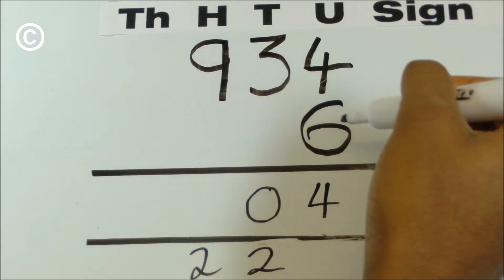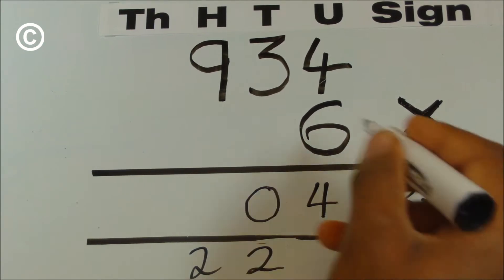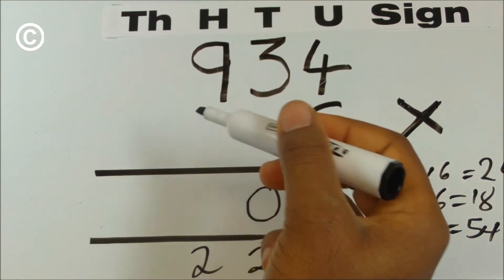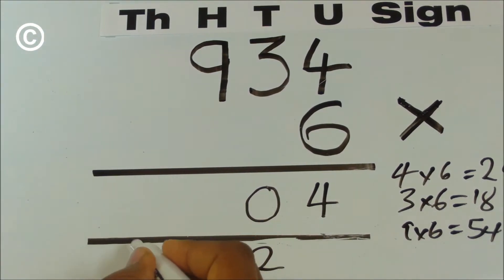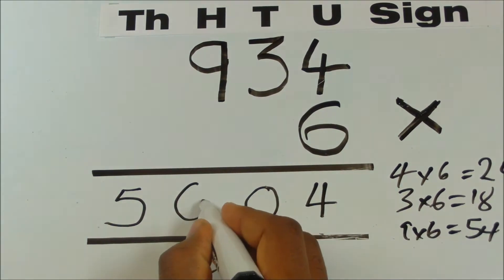9 multiplied by 6. 9 times 6 equals 54. And then you add this 2 that you carried over so it's 54, 55, 56. You carry the 5 over to the thousands column and enter the 6 here.